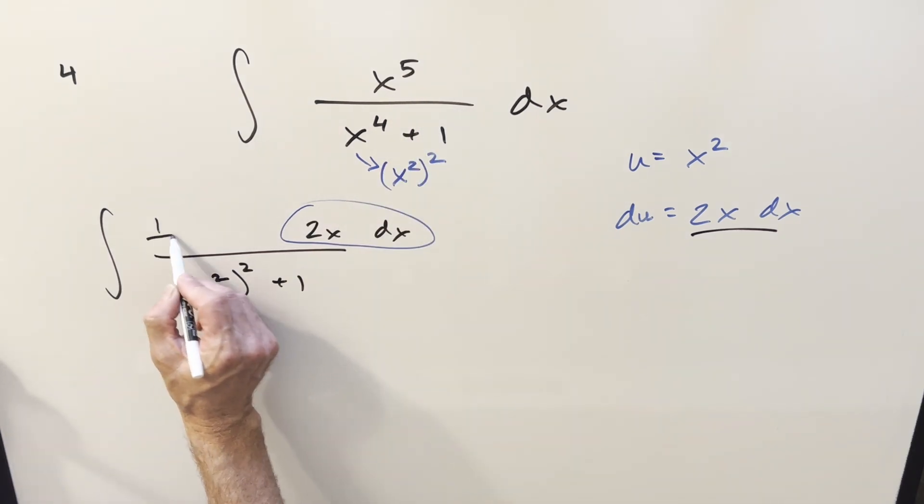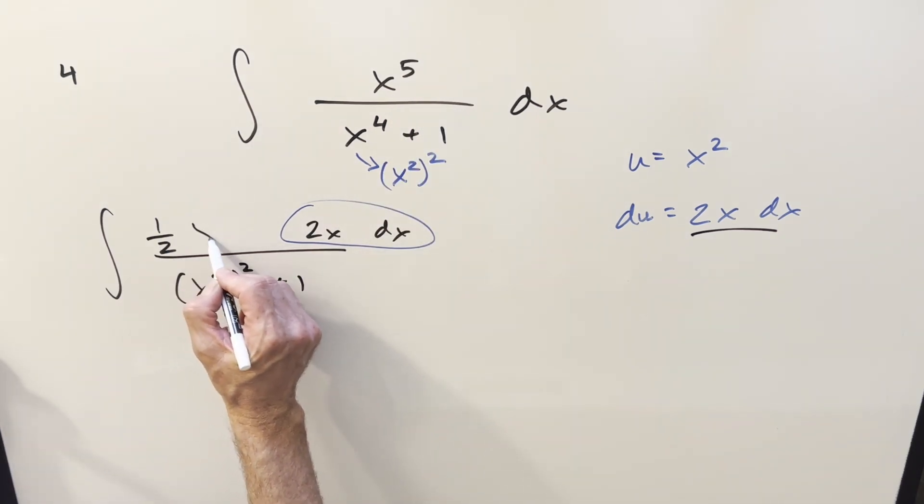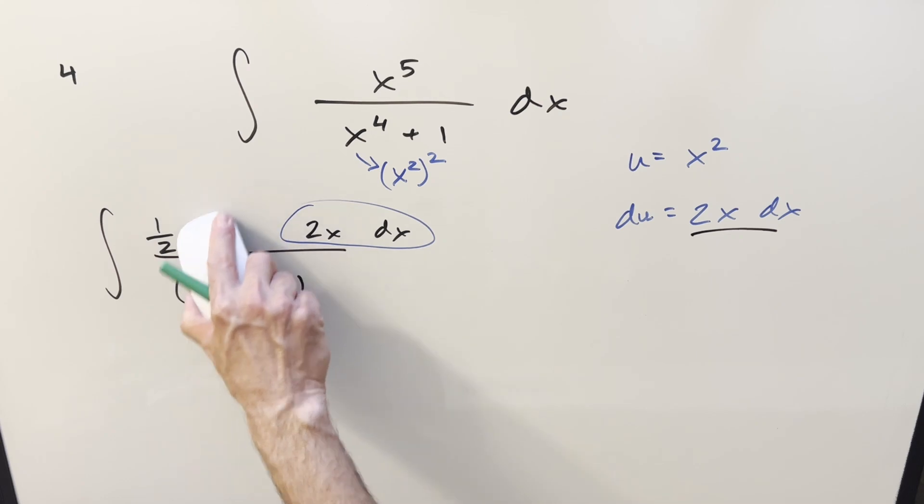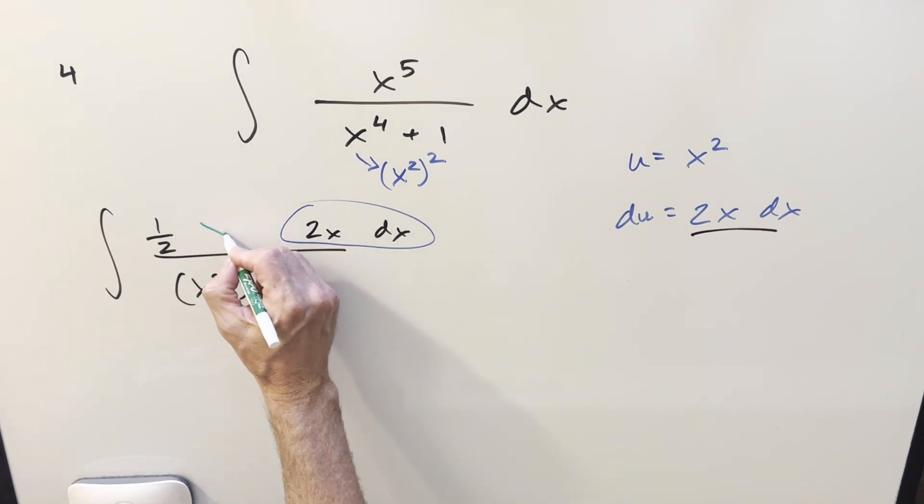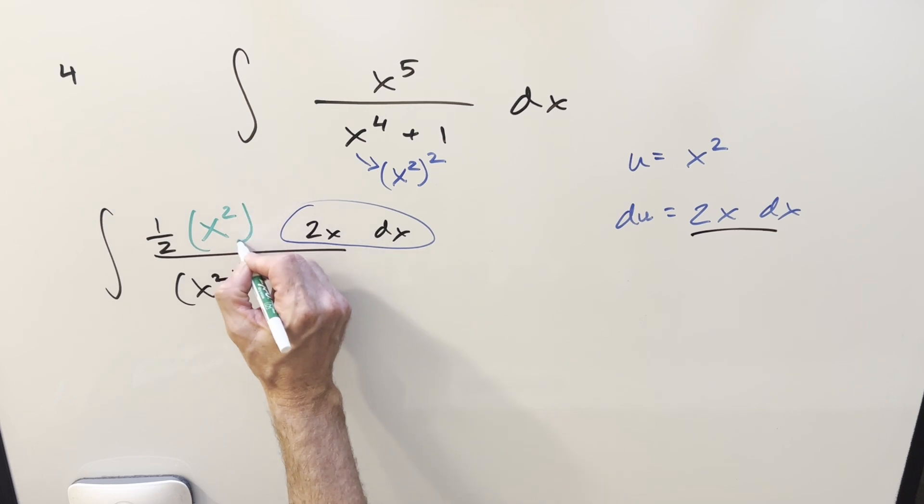So for this to work out right, we need this to be 1 half x to the 4th. Now that's going to work, but let me write it this way because then it's going to set it up nicer. So we'll write our x to the 4th as x squared all squared.